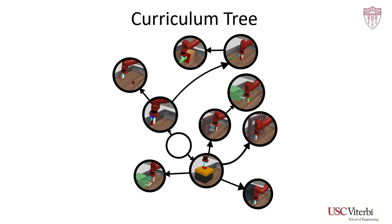Here is a tree representation of a sequence of transfers that would allow efficiently solving the MetaWorld MT-10 benchmark. First, we begin by training two policies from scratch, represented as arrows leading off of the empty circle. Then, we repeatedly apply our transfer primitive along each of these directed edges outwards to acquire the remaining tasks.